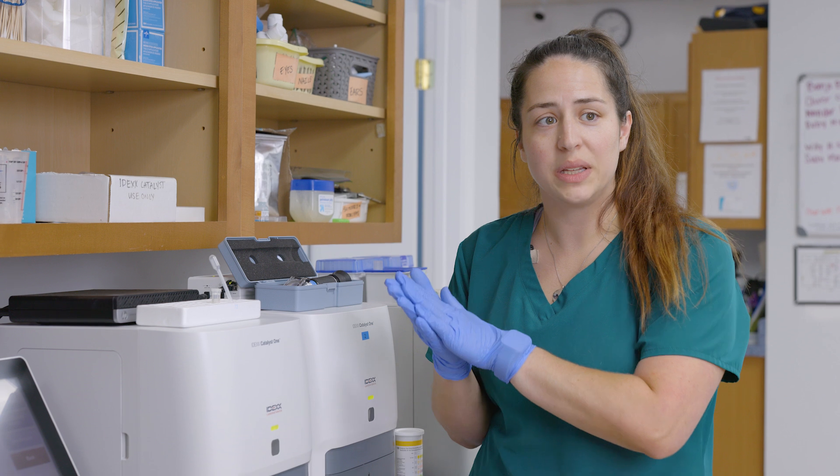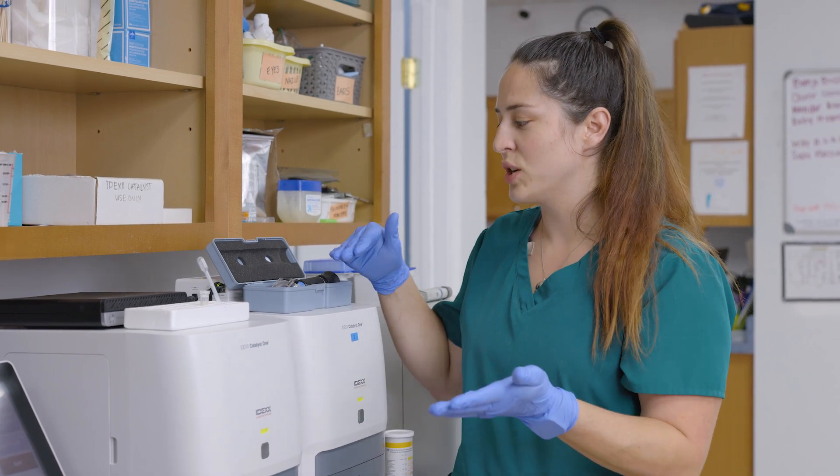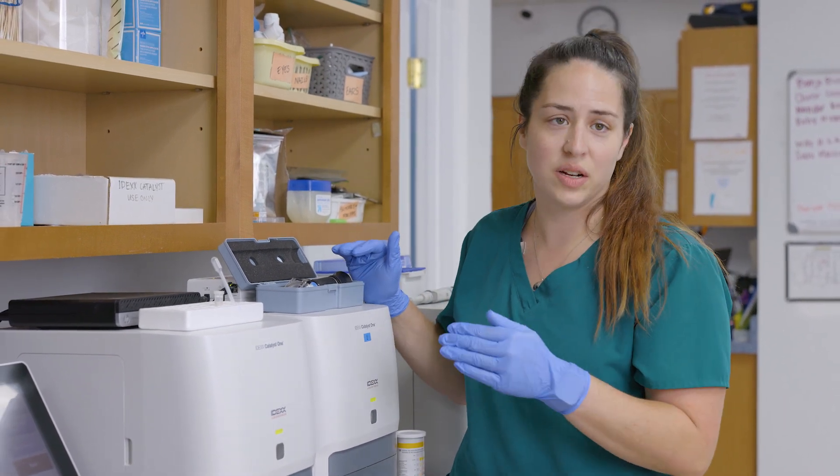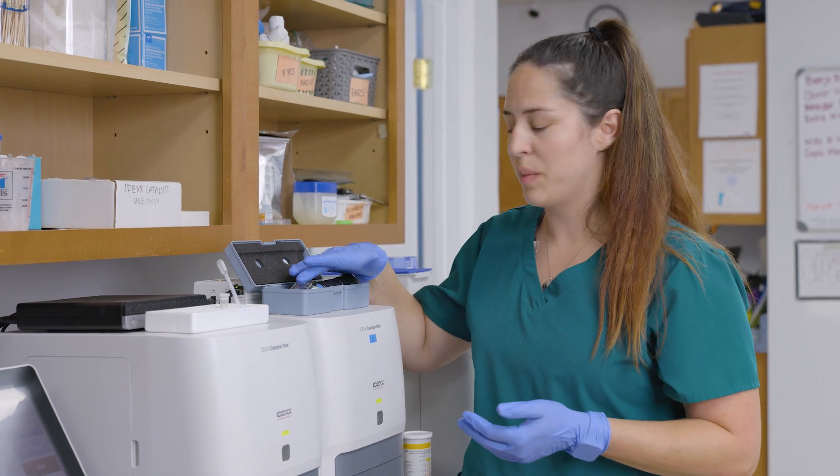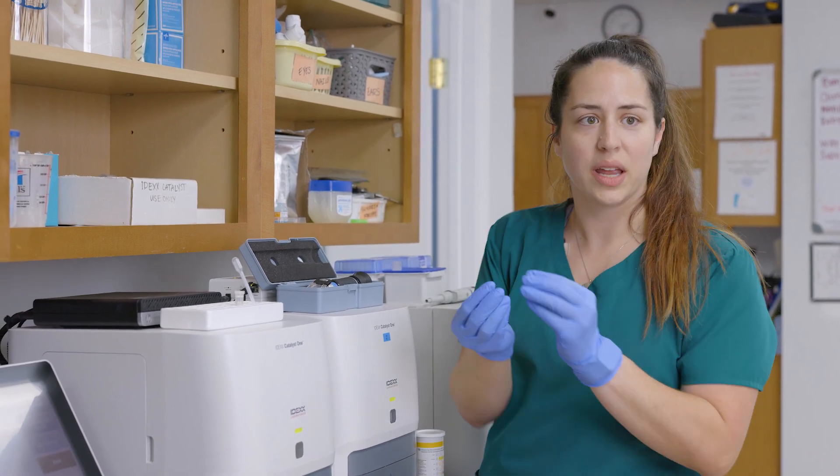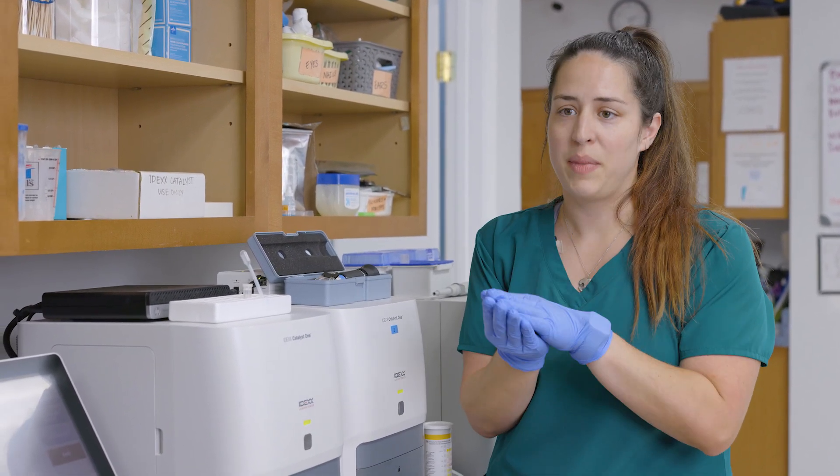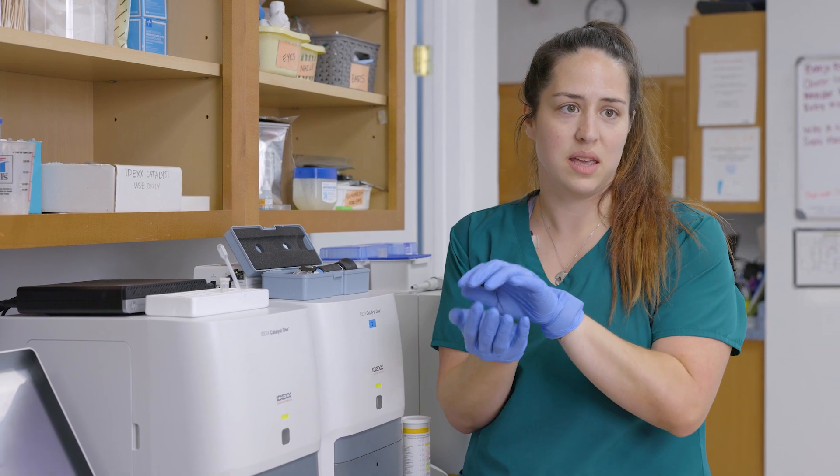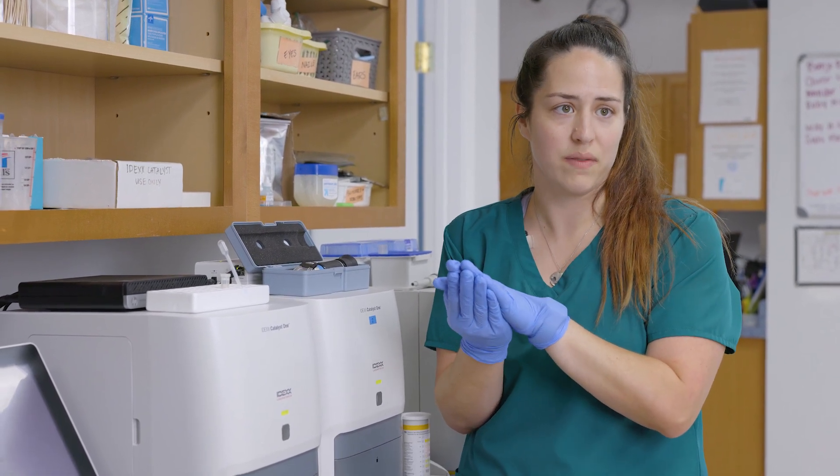Another part of doing our complete urinalysis is we want to make sure that we're checking for the urine specific gravity. We will use a refractometer for this test. What that is checking is it's checking basically the amount of particulate that is in the urine. So the urine concentration is what we're looking at for that.